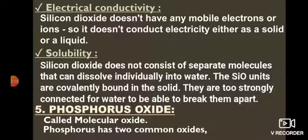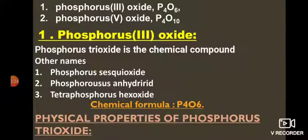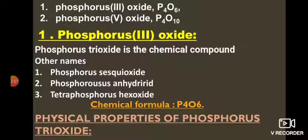Phosphorus oxides: phosphorus exists in two common oxide forms. Number one is phosphorus trioxide, P4O6 (dimer form; monomer P2O3), in which phosphorus exists in the +3 oxidation state. Number two is phosphorus pentoxide, P4O10 (dimer; monomer P2O5), in which phosphorus exists in the +5 oxidation state.